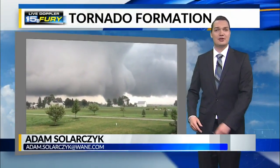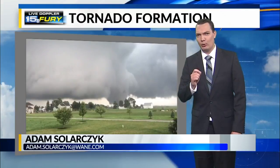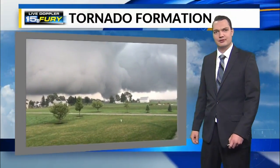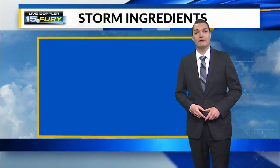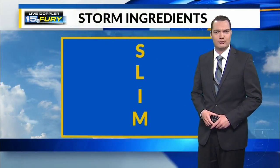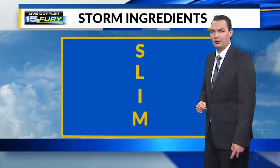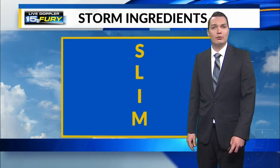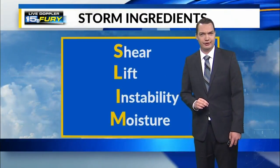Severe thunderstorms include many threats, perhaps the most dangerous being tornadoes. But what goes into creating these beautiful but destructive forces of nature? First, we have to have a thunderstorm. There are four ingredients required for the formation of severe thunderstorms that could spawn tornadoes. In meteorology, we look for SLIM, which stands for Shear, Lift, Instability, and Moisture.